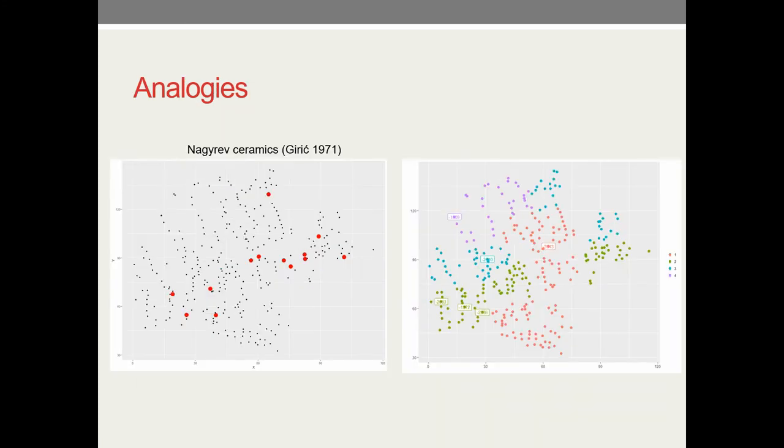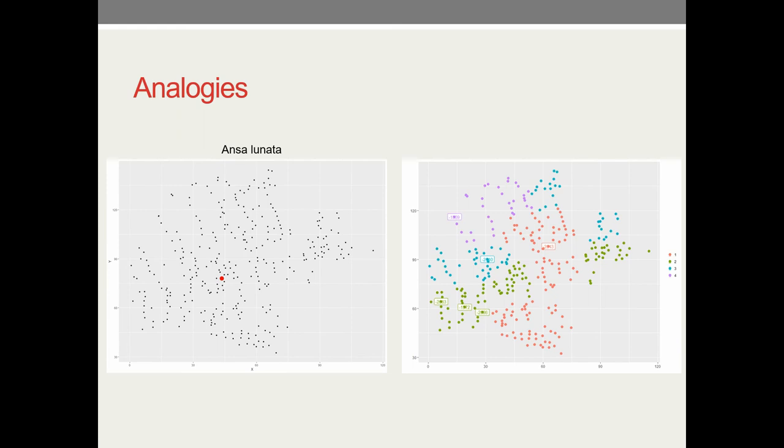We also compared our results with some analogies. For example Vatya ceramics should be located in the older part of the necropolis by previous research, and it is roughly that way. They are catching these first two phases possibly. Then some of the handles are supposed to be younger and related to middle Bronze Age. If this is a chronology they would be, we would expect them to be here but they are in the central part of the necropolis.